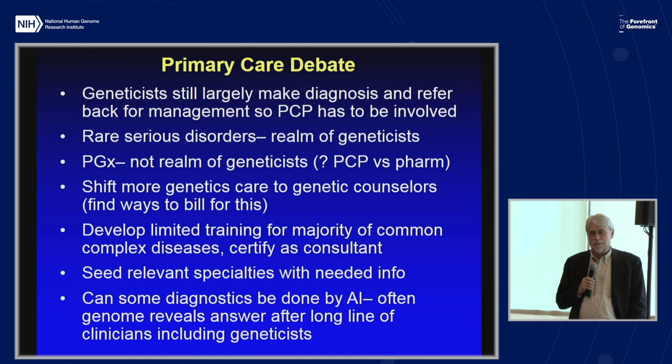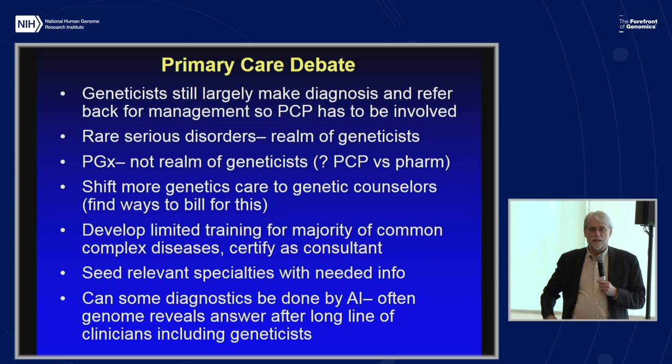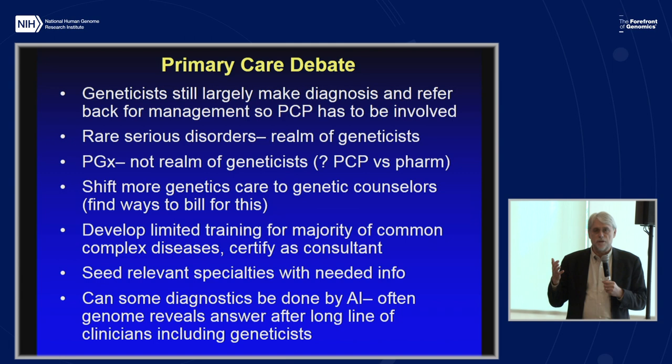We need to develop limited training for the majority of common complex diseases — training programs that allow primary care providers to get certified as experts in a particular area. It doesn't make sense for every primary care provider to wait for some rare patient to come into their office. Maybe we can use primary care providers with additional certification as extenders to the trained genetics workforce, so that hospitals without these resources might at least have somebody who knows when it's important to refer and when it might be handled locally.